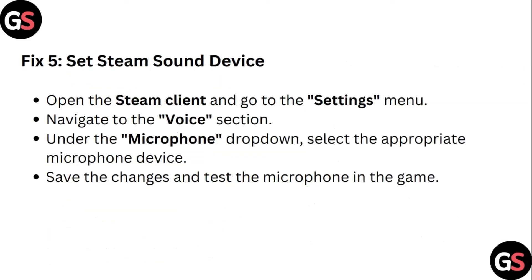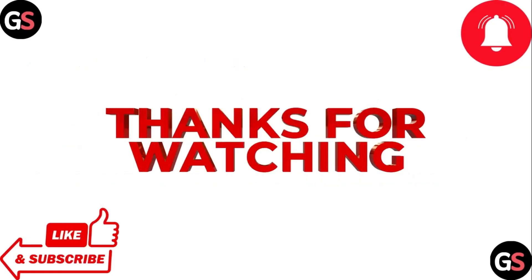Step 5: Set the Steam sound device. Open the Steam client and go to the Settings menu. Navigate to the Voice section. Under the microphone drop-down, select the appropriate microphone device. Save the changes and test the microphone in the game. Thank you for watching.